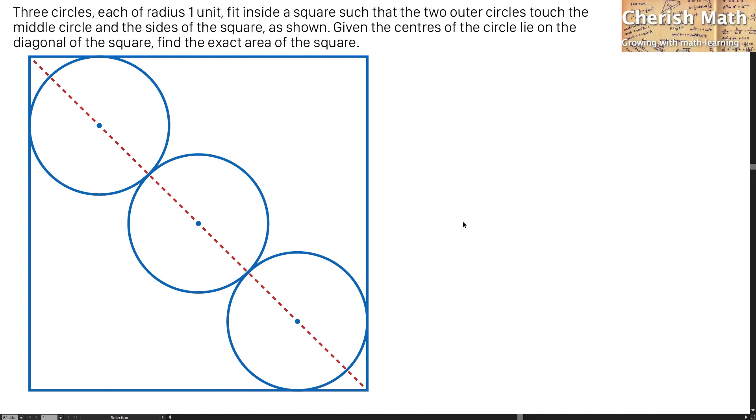Say hi from Cherish Math. This is our question. Three circles, each of radius 1 unit, fit inside a square such that the two outer circles touch the middle circle and the sides of the square, as shown. Given the centers of the circle lie on the diagonal of the square, find the exact area of the square.